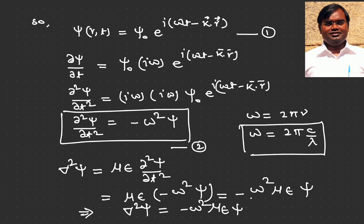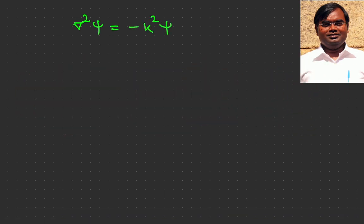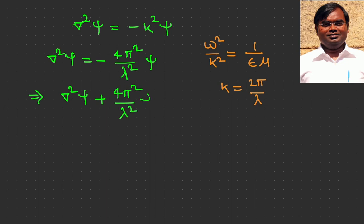Now substituting the value of με and ω, we get ∇²ψ = −k²ψ, where we have used the fact that ω²/k² = 1/(εμ). Also, since k = 2π/λ, putting this value we get ∇²ψ = −(4π²/λ²)ψ, which implies ∇²ψ + (4π²/λ²)ψ = 0.